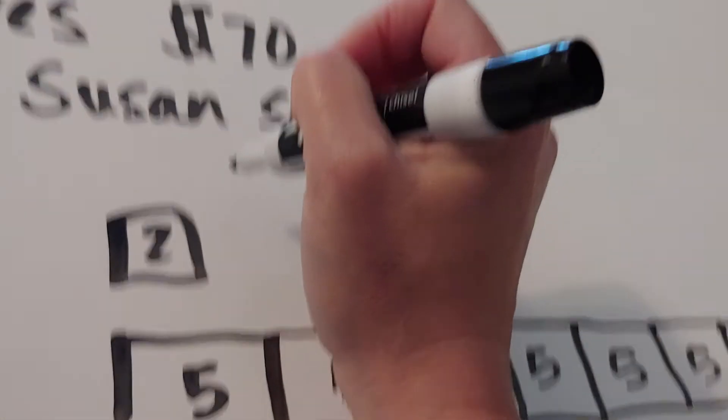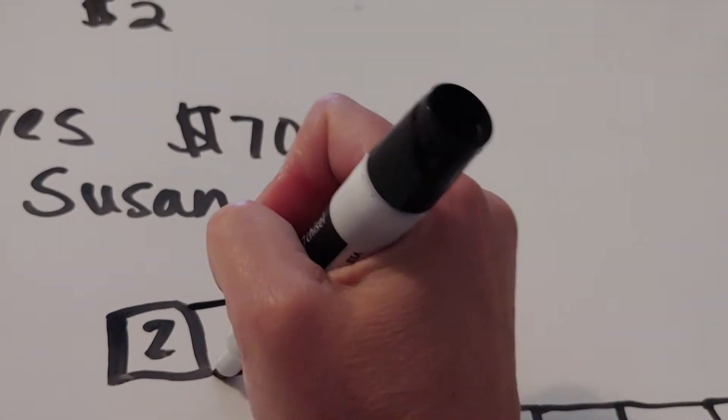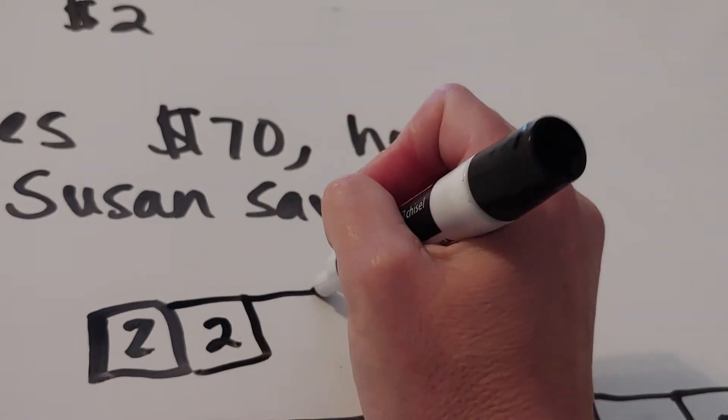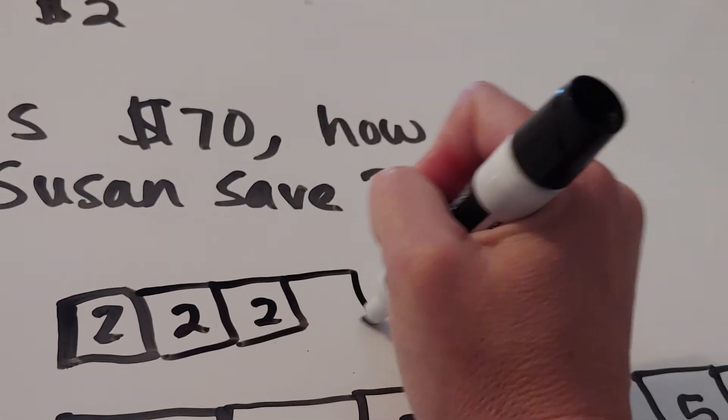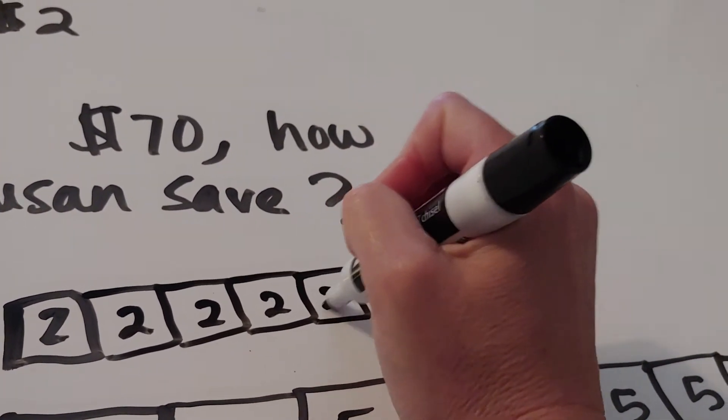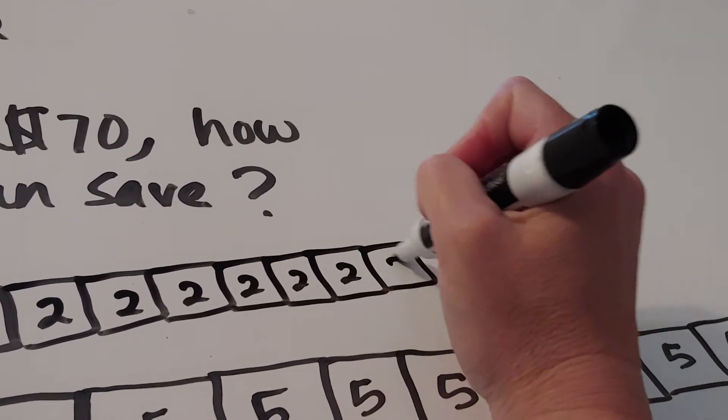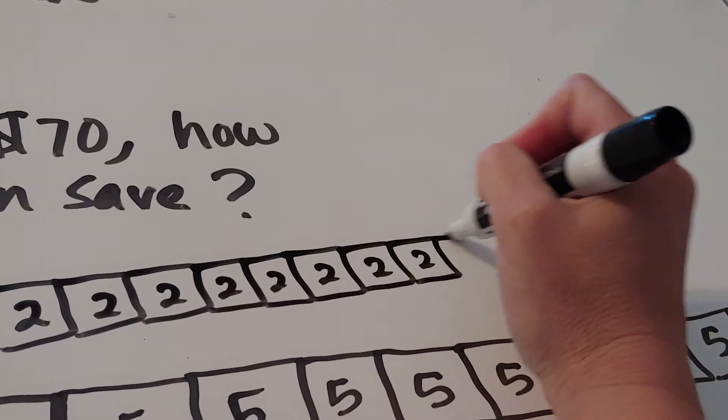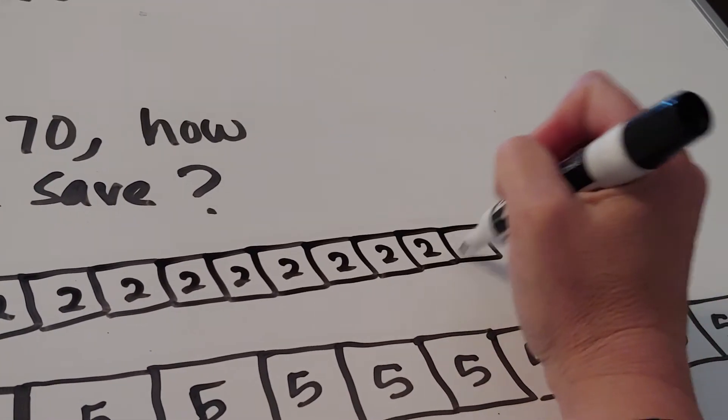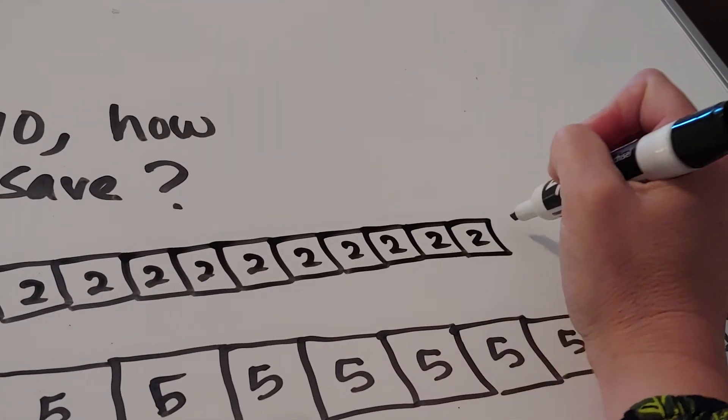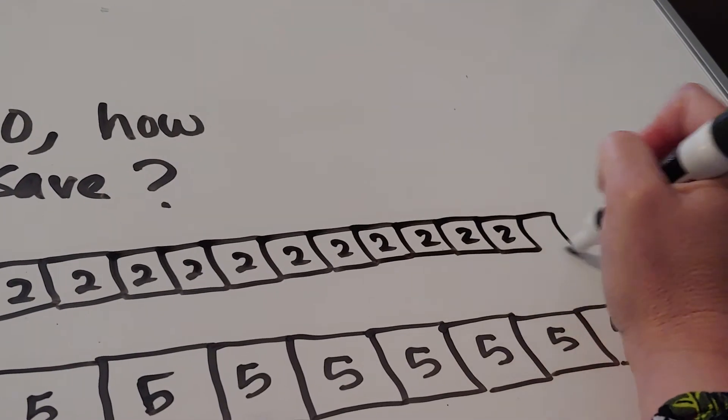So that means I would want 14 boxes here as well, but these will all be twos. So one, two, three, four, five, six, seven, eight, nine, ten, eleven, twelve, thirteen, fourteen.